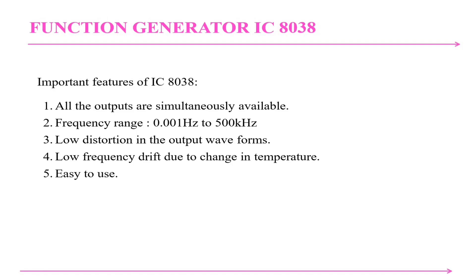If you want to measure the output signal with an oscilloscope to see its waveform, you first need to know the signal source before measuring the output, and this is provided by the function generator. The ICL8038 is a waveform generator and there are many ways to make a function generator. This is another great option, providing a wide range of frequency from 0.001 Hz up to 300 kHz or possibly up to 500 kHz. It provides low distortion in the output waveform and low frequency drift due to temperature changes.